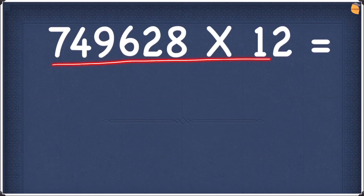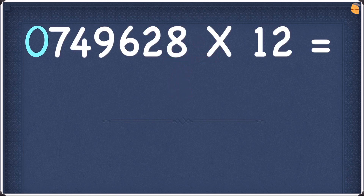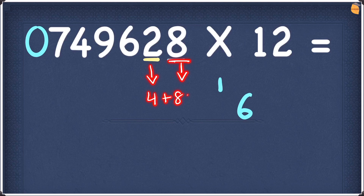Now we're going to look at 749628 times 12. Add a 0 before the 749628. Double 8 gives 16. We don't have a right hand side number, so write the 6 and take the 1 as a carry. Next digit is 2. Double 2 gives 4. 4 plus 8 is 12. Write the 2 and take the 1 as a carry.